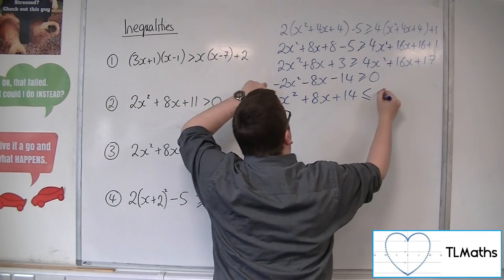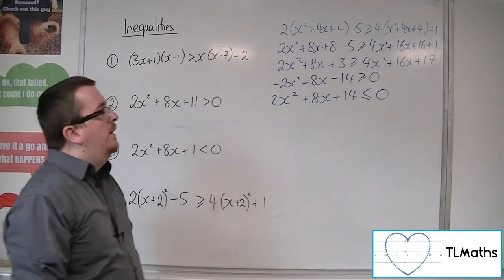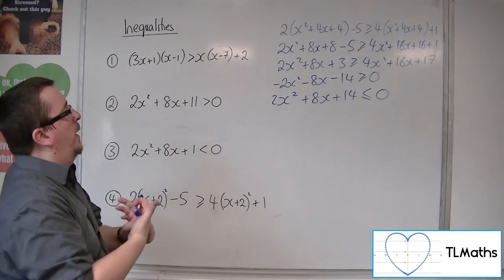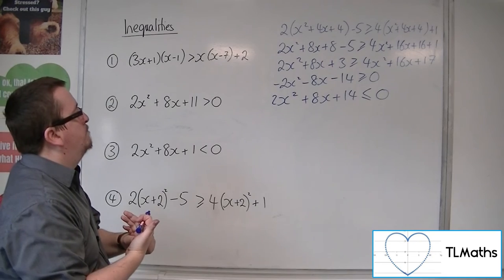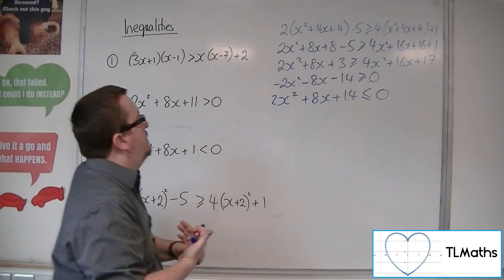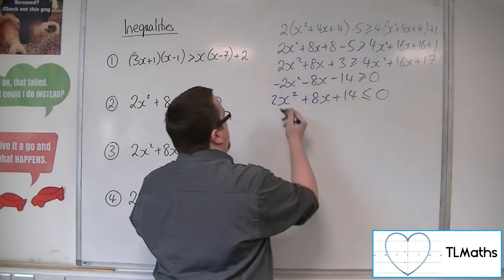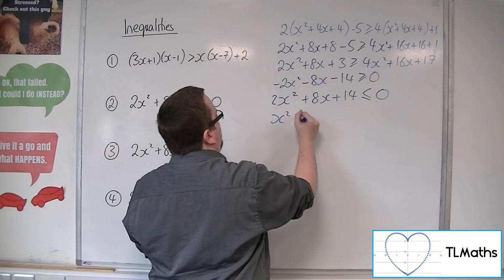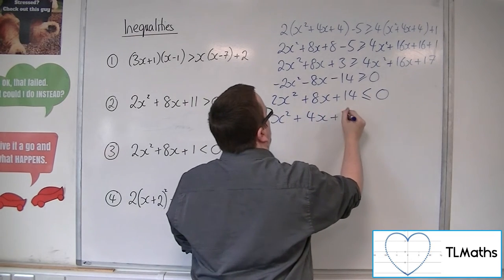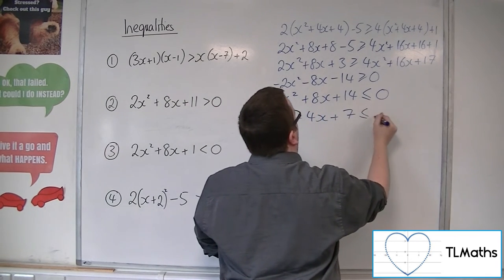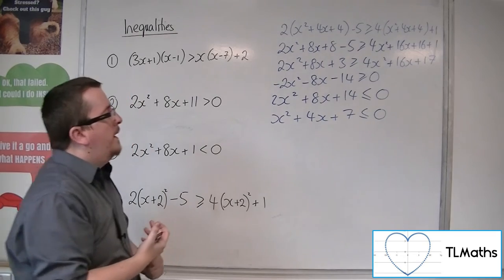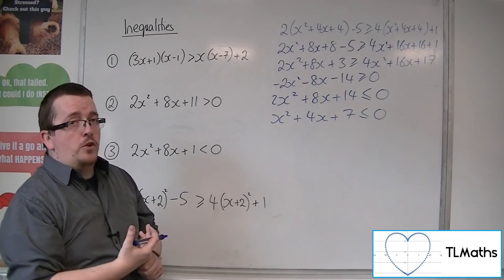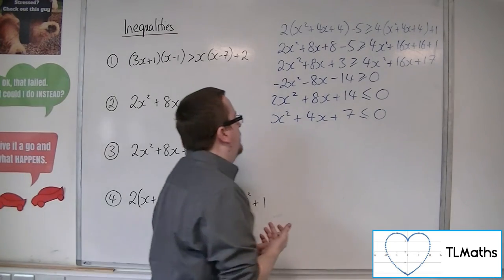Because we've got negatives all the way through, multiplying through by minus 1 gives 2x squared plus 8x plus 14, but we must change the direction of the inequality. We can also divide through by 2, giving x squared plus 4x plus 7 is less than or equal to 0. Now let's try the quadratic formula.